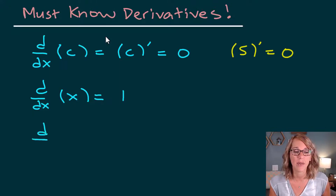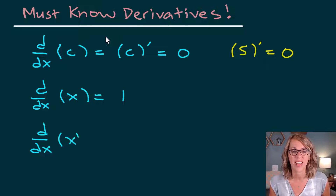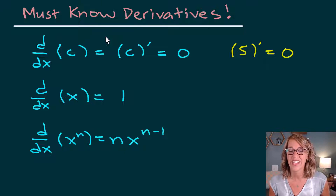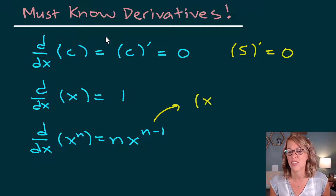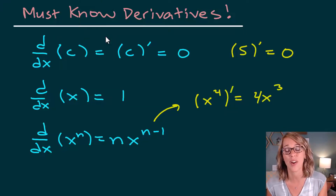Next, we've got the power rule. So d/dx of x to the n: the power rule says to bring the power out in front — n — and then x to the reduced power, n minus one. So for example, with x to the fourth power, the four comes out in front, and the new power is four minus one, or three.